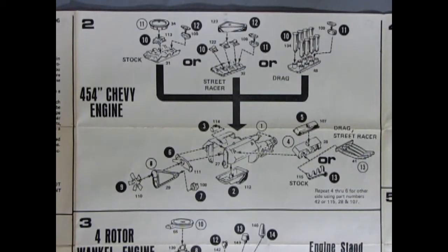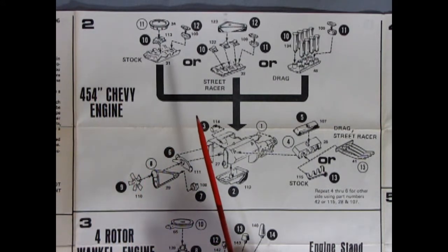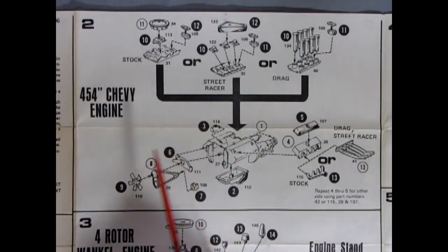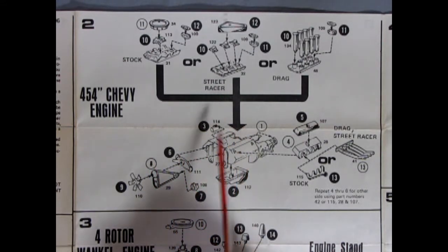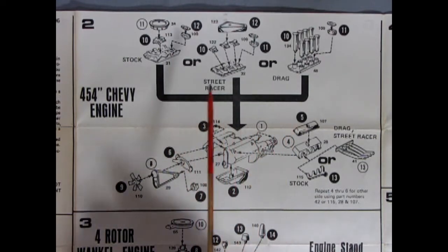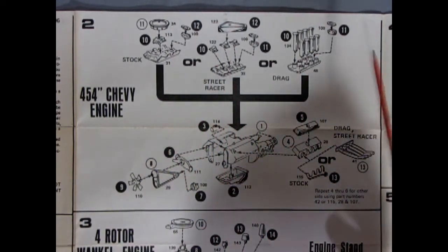Now here's what really gives this thing away as being a 1974, or one of the things, is the 454 Chevy engine, which of course was dropped in 1975 for the more fuel-efficient, economical 350 cubic inch engine. Because in 1975, they were getting into that whole gas crunch thing. Anyway, continuing on.